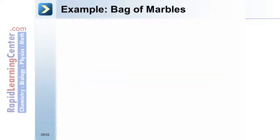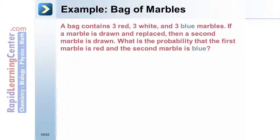Example: Bag of marbles. A bag contains 3 red, 3 white, and 3 blue marbles. If a marble is drawn and replaced, then a second marble is drawn, what is the probability that the first marble is red and the second marble is blue?